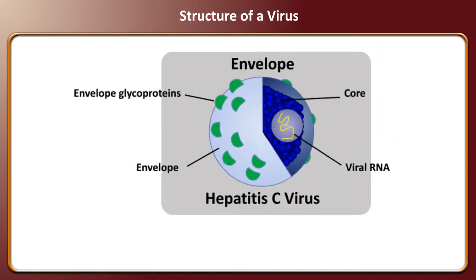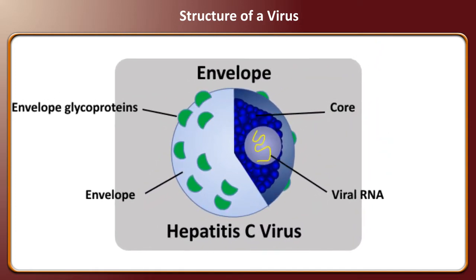The enveloped virus structure is a conventional icosahedral or helical structure that is surrounded by a lipid bilayer membrane. Here, the virus is encased or enveloped. An example of an enveloped virus structure is the Hepatitis C virus.